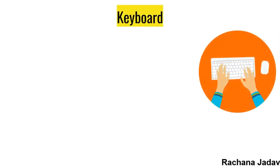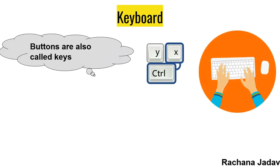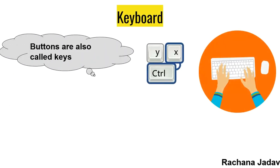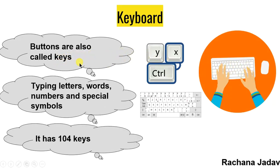Keyboard is an output device in which you will see buttons. Yeh sare buttons ko hum log keys bolte hai. In the keyboard we type letters, words, numbers, and special symbols — yaane special symbols yaane full stop, comma, question mark. So all of that you can also type with the keyboard.